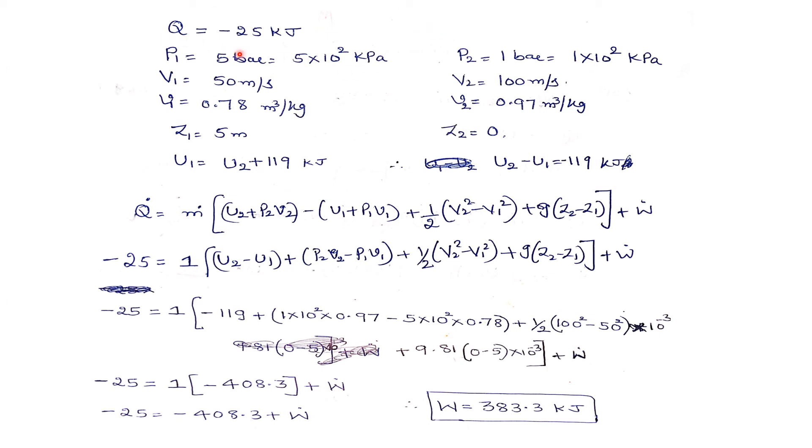Heat is flowing out of the device, so it's minus 25 kilojoules. Pressure P1 is given in bar, converted to kilopascal. Velocity V1 is 50 m/s, specific volume is given. Z1 equals 5 meters above the exit level. When Z2 is zero, Z1 equals 5 meters. Internal energy is 119 kilojoules greater than the exit, so U1 equals U2 plus 119 kilojoules. All these values are given in the problem.